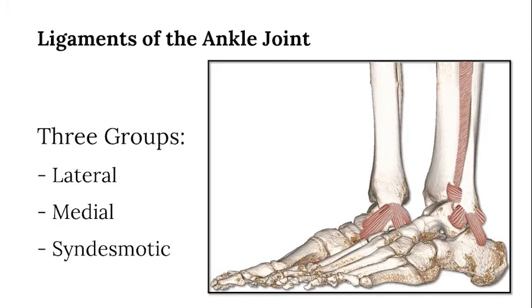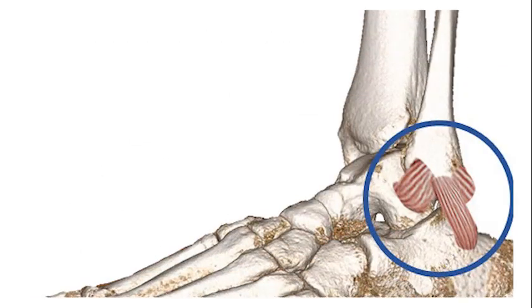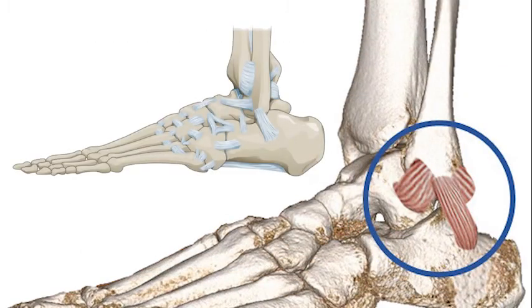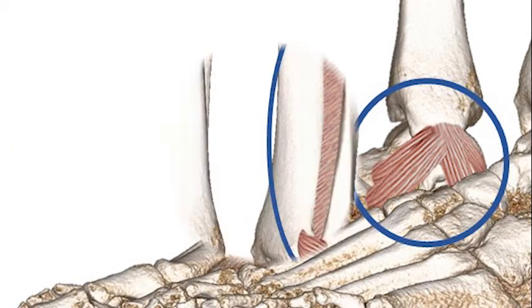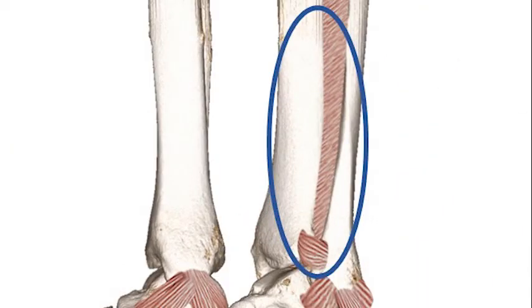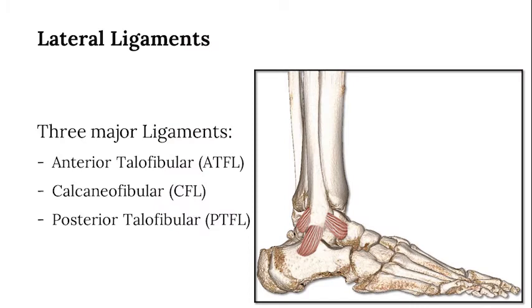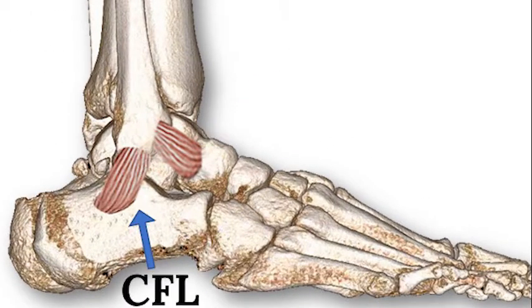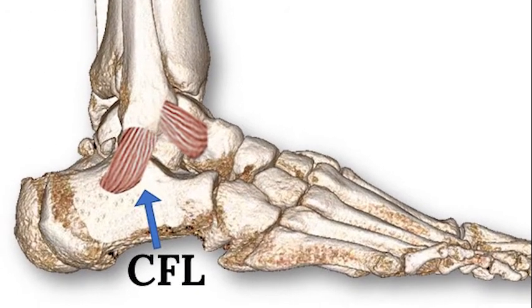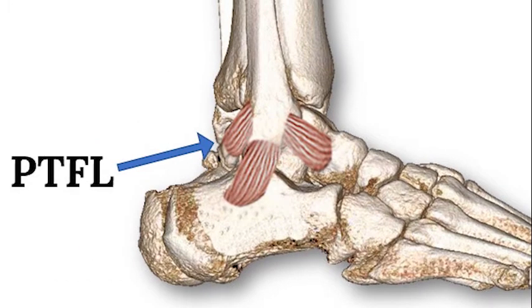The ankle ligament complex is made up of three groups: the lateral ligament complex, the medial ligament complex, which is predominantly the deltoid ligament, and the syndesmotic ligaments. The lateral ligaments are the main stabilizers to inversion of the ankle and are made up of the anterior talofibular ligament, the calcaneofibular ligament, and the posterior talofibular ligament.